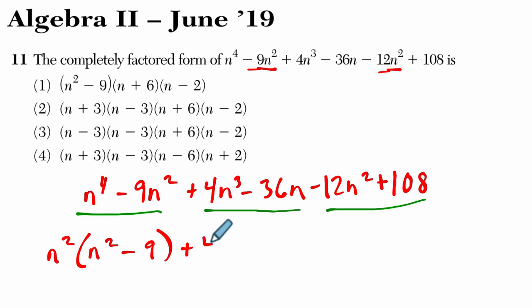So in the next one, even if you don't recognize that, if you try factoring out 4n, which is the largest common factor, what's left is n-squared minus 9, right? 4n times n-squared is 4n-cubed. And 4n times negative 9 is negative 36n.